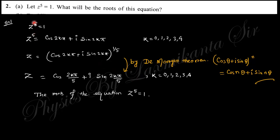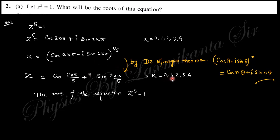Since there is z to the power 5, there must be 5 roots of this equation. That is why the value of k is 0 to 4, such that you can write the solution with k equal to 0, 1, 2, 3, 4.